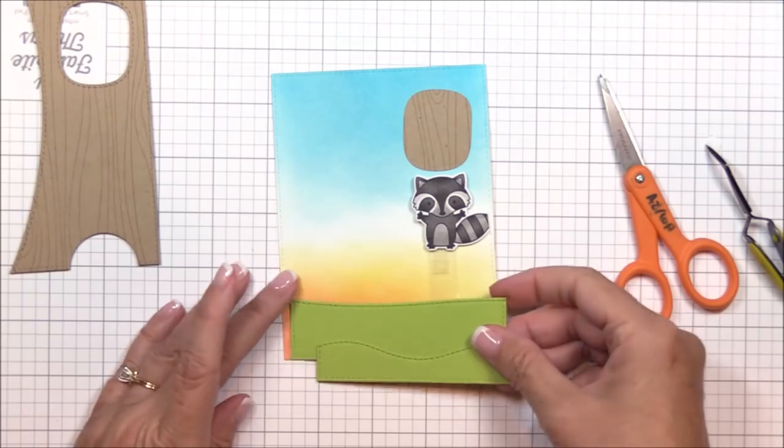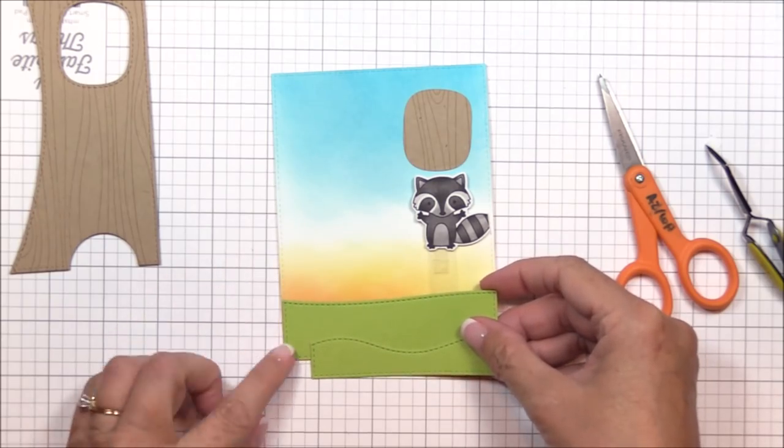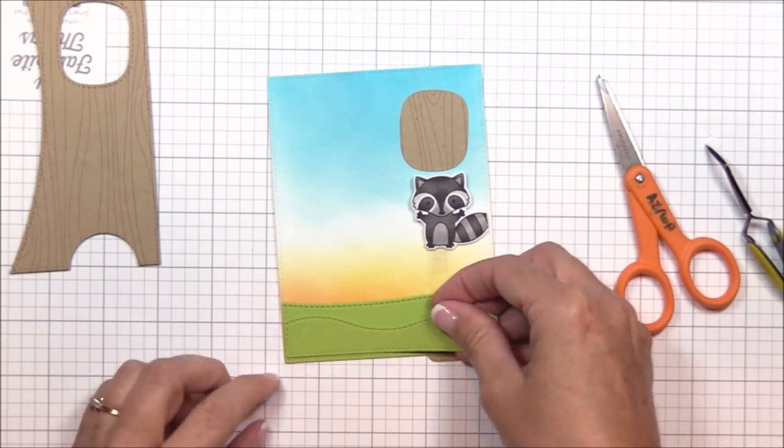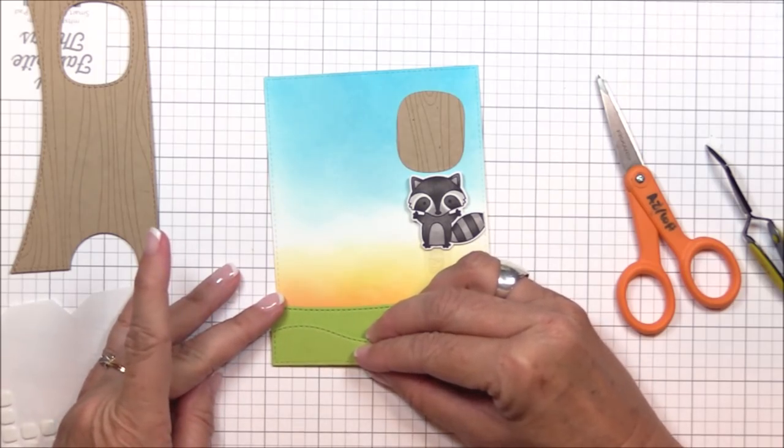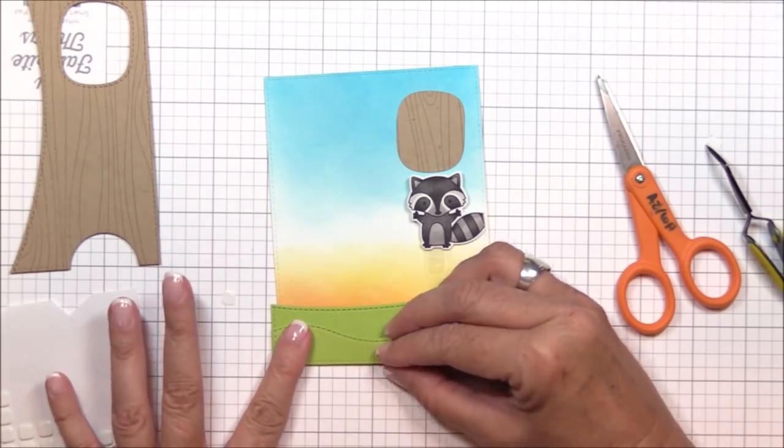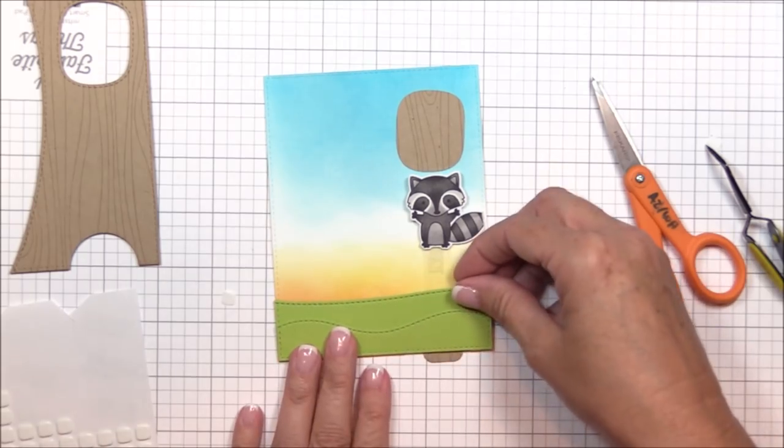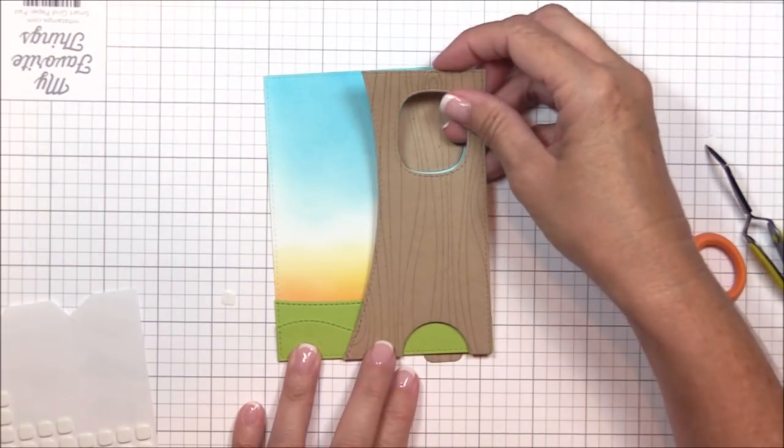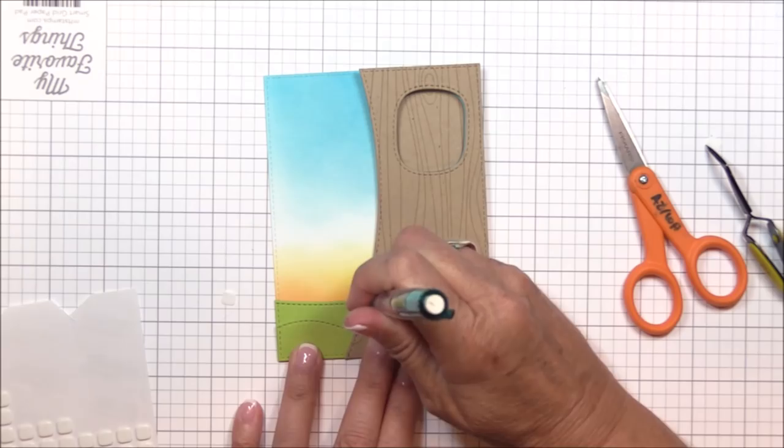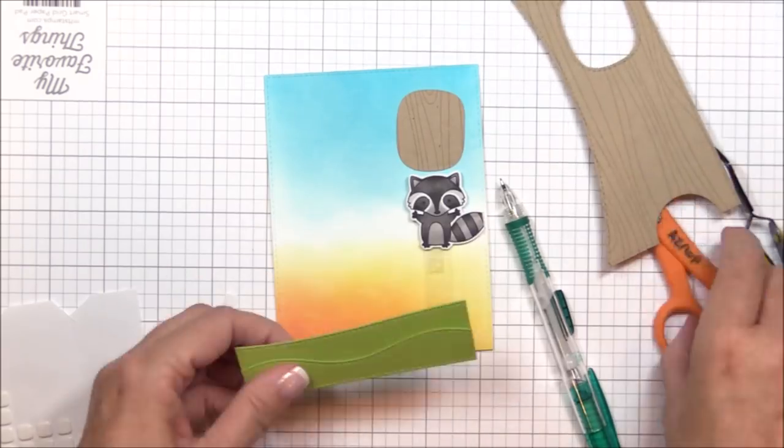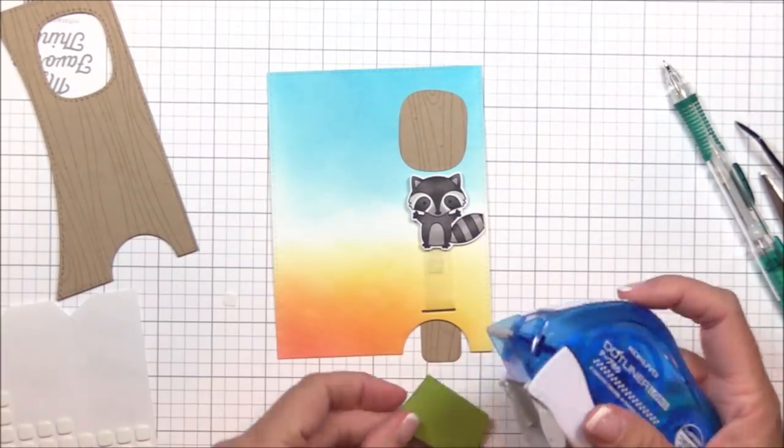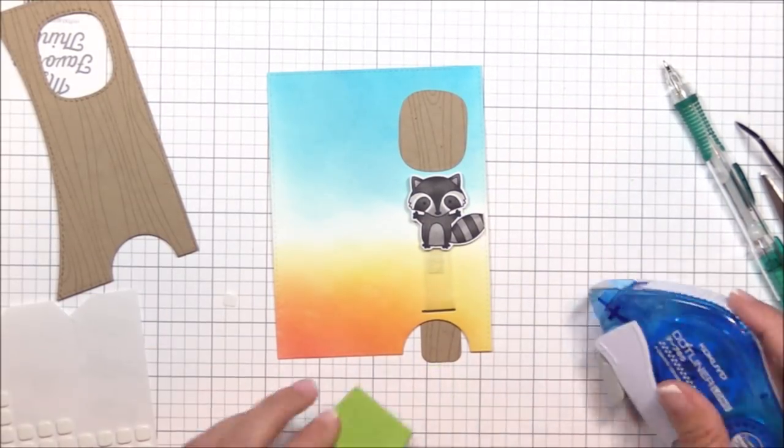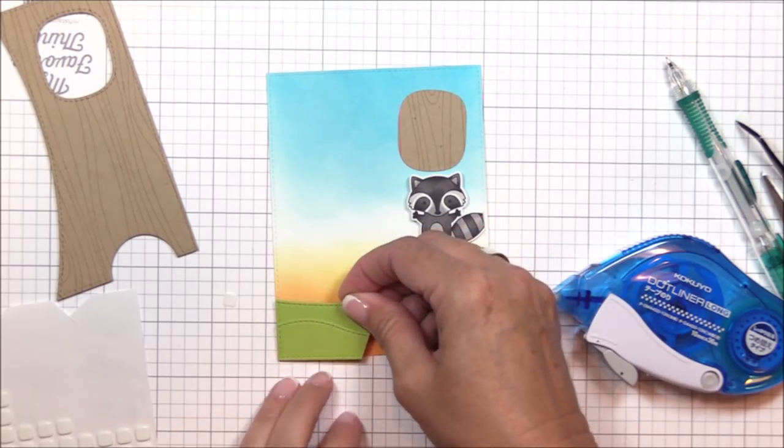And now we can begin to assemble our scene. I die cut some sour apple cardstock using the stitched snowdrifts dies to create some grass, and I've layered the two pieces together with some thin 3D foam squares. I don't need the entire length of the grass for my scene, so I'm positioning the tree trunk onto the image panel to give me an idea of where the grass should end, and then I'll trim off the excess with my scissors.